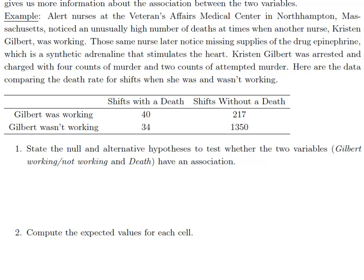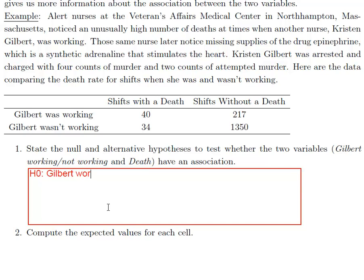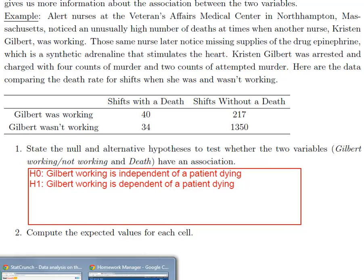Alright, so just like in the other example, we just state the null and alternative in words. So H naught Gilbert working is independent of a patient dying. So the patient may die or not, but they don't have any more of a chance to die when Gilbert's working versus not working. And then the alternative is that Gilbert working is dependent of a patient dying. Meaning maybe patients are more or less likely to die when Gilbert's working. And so we're going to go to StatCrunch right now for our very last example.